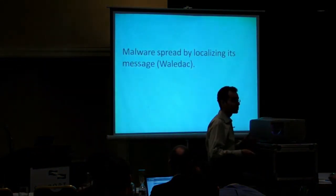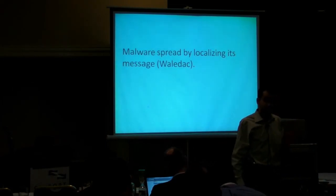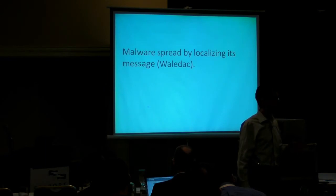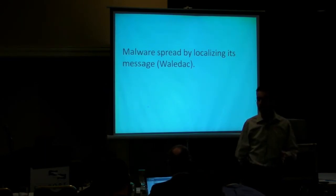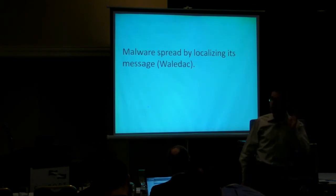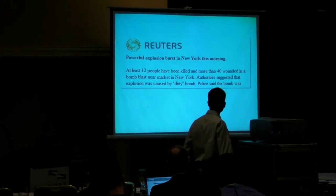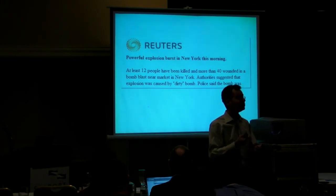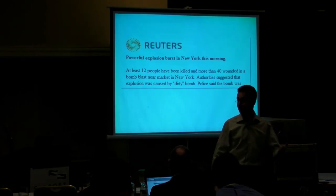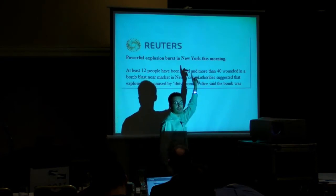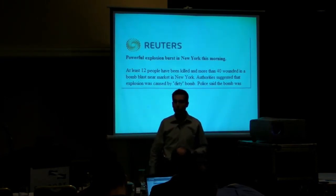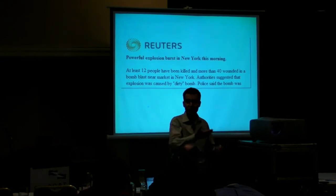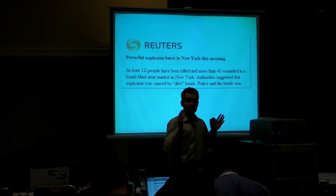Here's an example — a variant of the Waledac worm, a very clever scheme. The Waledac worm spammed people saying there was breaking news that just occurred in their town — a bomb had exploded. They were invited to click a link. What the worm did was use a geolocation database to determine where the victim was browsing from, and customized the link to give the name of the town or city. If you were browsing from New York, it said the blast occurred in New York; from Oklahoma, it gave that locale. The message is personally relevant.